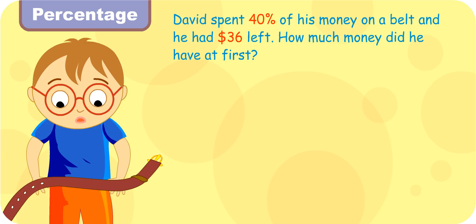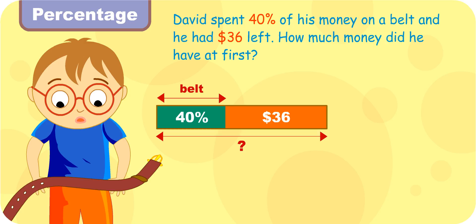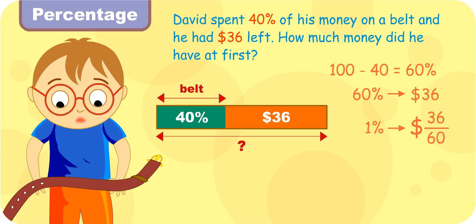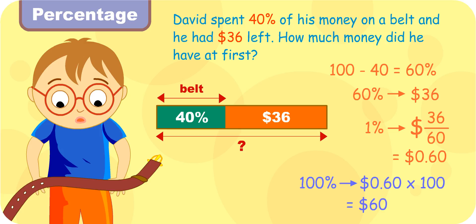I shall draw the model to guide me. That's a good practice, Turbo Girl. He had 100 minus 40, which equals 60% of his money left, which is $36. So 1% of his money is 36 divided by 60, which is 60 cents. Therefore, he would have 60 cents times 100, which is $60 at first.